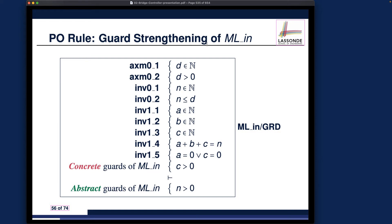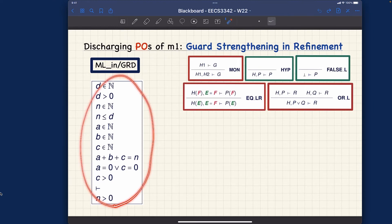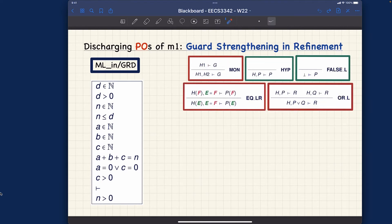If you thought about it, I can tell you that it is actually provable. Hopefully you didn't peek ahead. For those of you who may still want to do the proof yourself, I can give you a little hint. This is the sequent related to the guard strengthening constraint for ml_in. This can actually be proved using only these relevant inference rules — this should be enough to discharge this particular sequent. Can you see how? Pause the video and think about it.